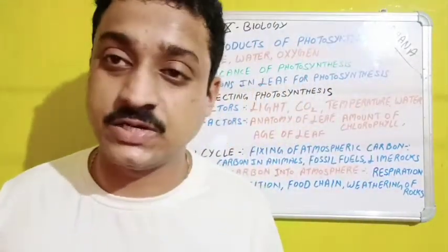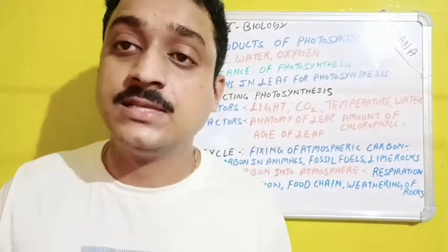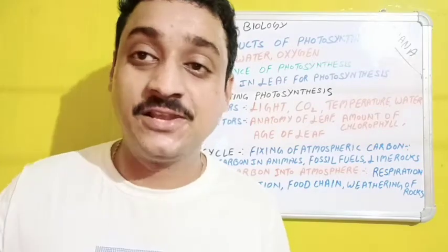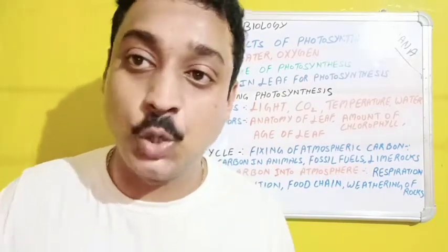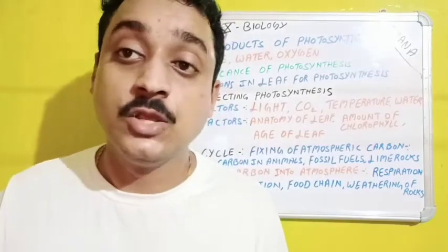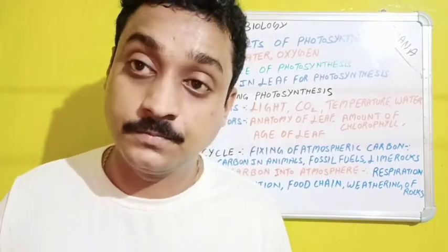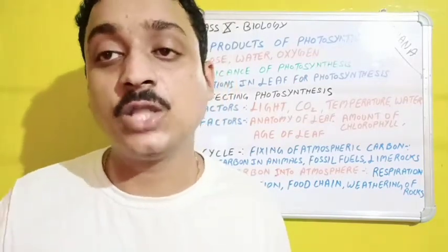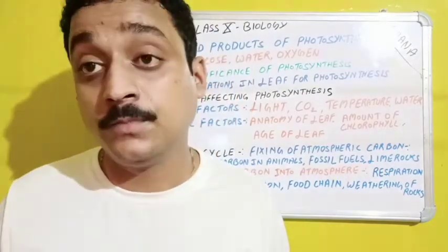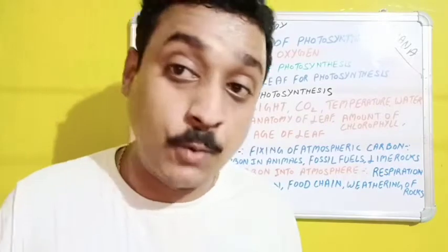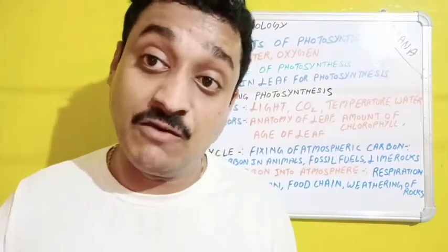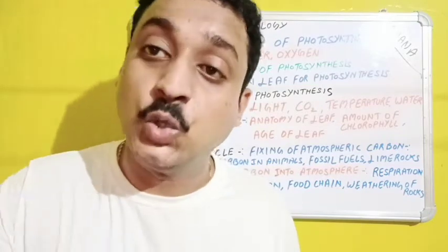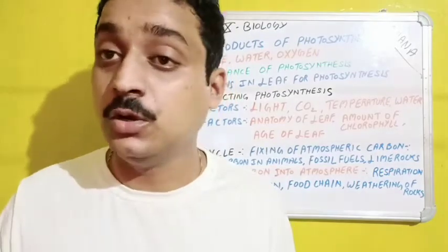Regarding CO2: one might think more CO2 means more photosynthesis, but CO2 is a toxic gas. If it increases beyond a limit, it damages the leaves and destroys chlorophyll. As the proverb goes, excess of everything is bad — if light is too high or CO2 is too high, photosynthesis is disturbed.